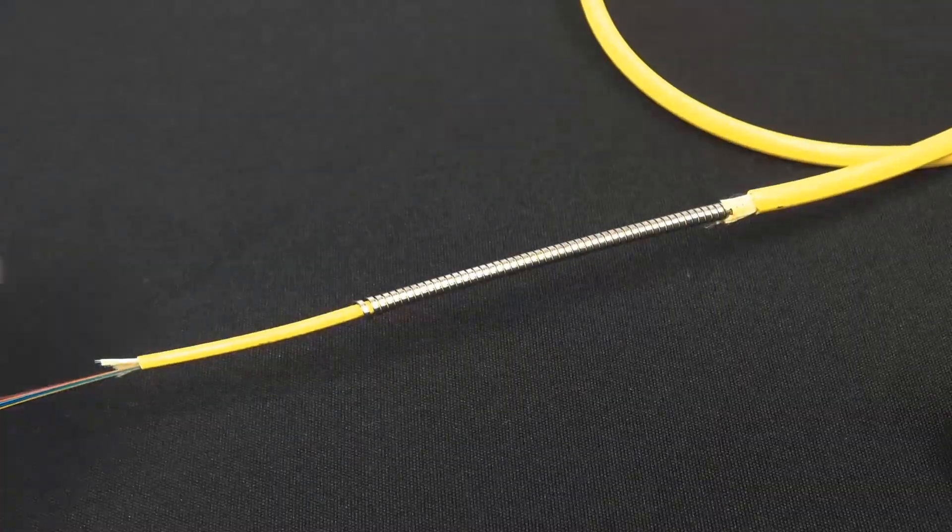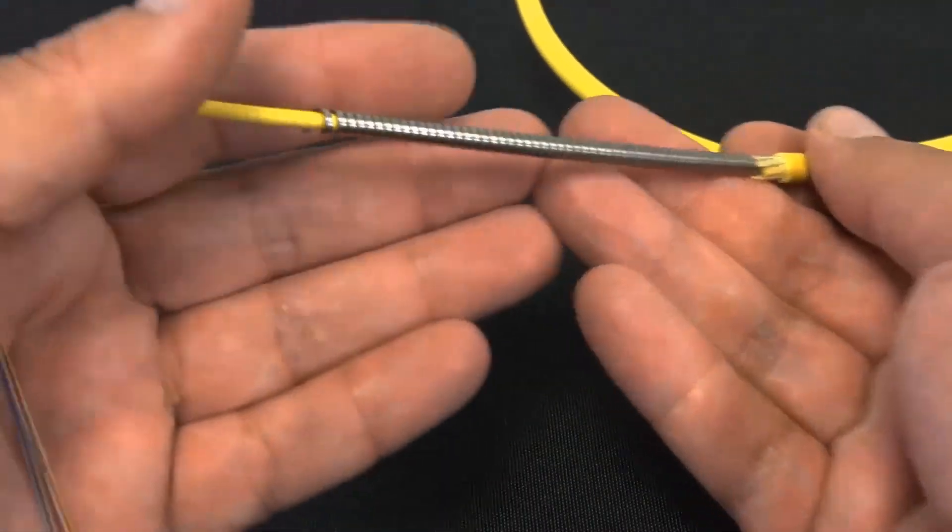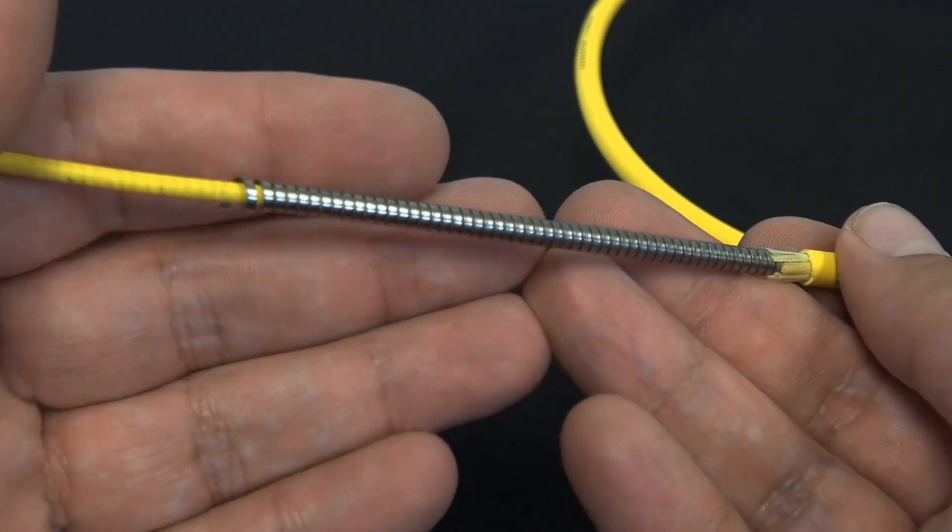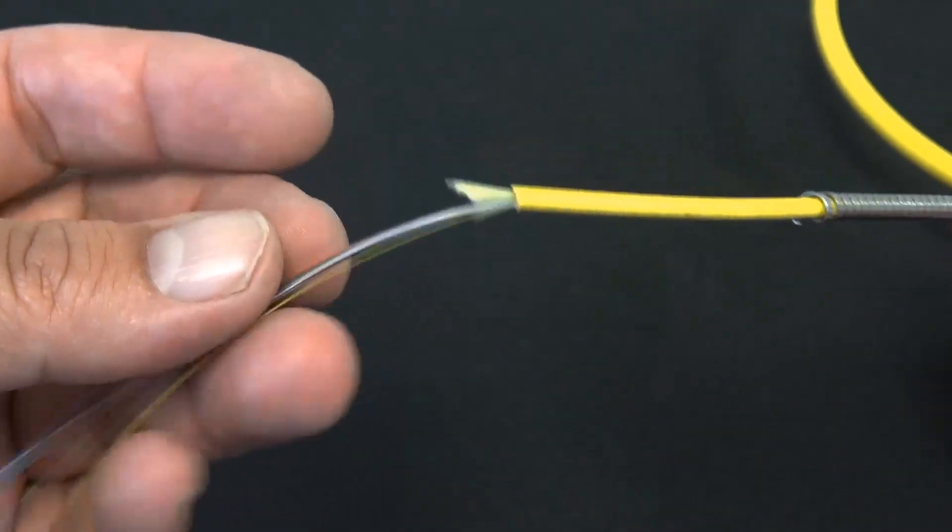And here's a look at the new nanofiber. It's a stainless steel coiled armored fiber. And the coil protects the bend-sensitive glass.